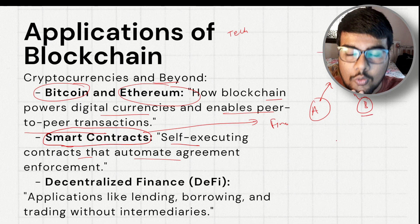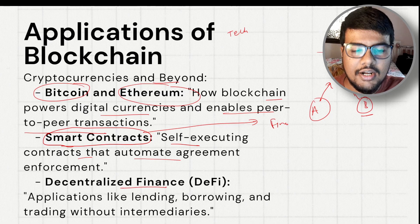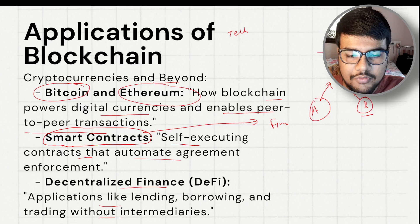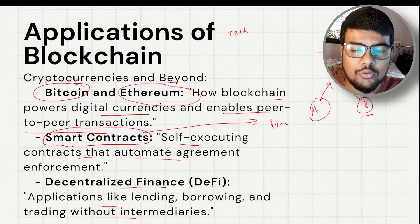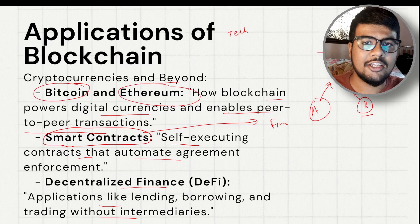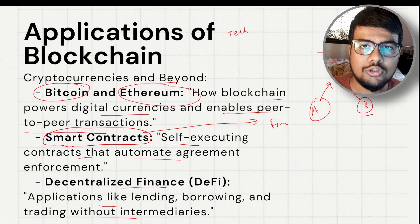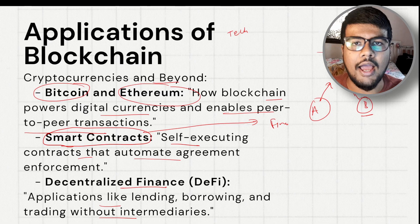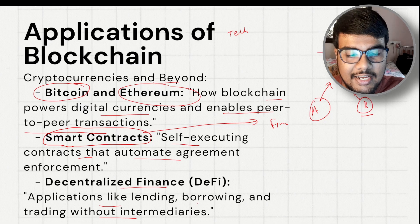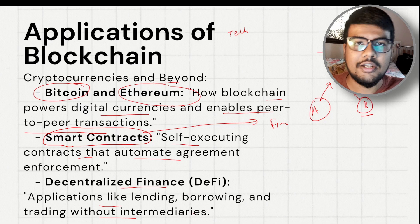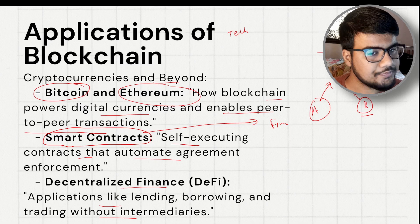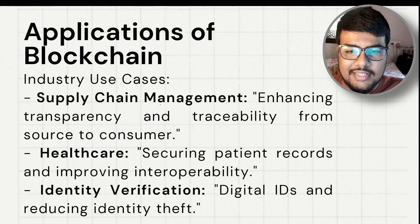Decentralized finance (DeFi) applications include lending, borrowing, and trading without any intermediary. Blockchain networks like Bitcoin and Ethereum were introduced to reduce third-party intervention from banking systems. By using blockchain and cryptocurrencies for lending and borrowing, intermediary banks and transaction fees charged by third parties are removed.